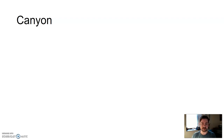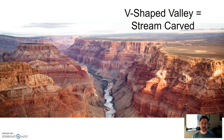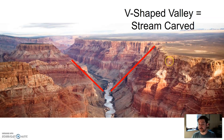Canyons — just kind of what it sounds like: narrow, steep-walled gorges carved by swift-moving water. Remember, V-shaped channels. Weathering and erosion, in this case mostly due to water — they are a common desert feature. What little water we do have can get funneled into areas and cause these features. This is an area of the Grand Canyon — sedimentary rocks. Sedimentary rocks are easier to break down than igneous or metamorphic rocks.